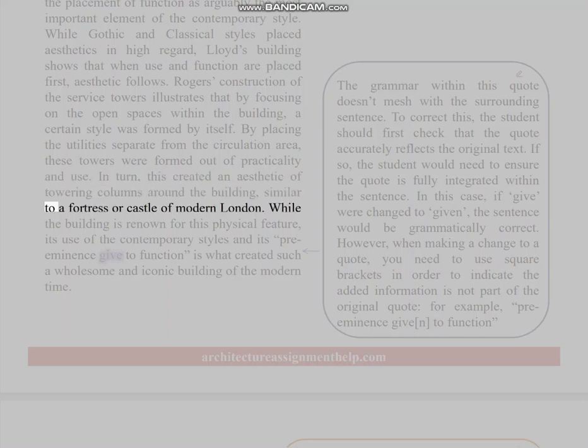If so, the student would need to ensure: in turn, this created an aesthetic of towering columns around the building, similar to a fortress or castle of modern London. While the building is renowned for this physical feature, its use of the contemporary styles and its preeminence give to function is what created such a wholesome and iconic building of the modern time. The student would need to ensure the quote is fully integrated within the sentence. In this case, if 'give' were changed to 'given,' the sentence would be grammatically correct. However, when making a change to a quote, you need to use square brackets to indicate the added information is not part of the original quote. For example: preeminence, give[n] to function.